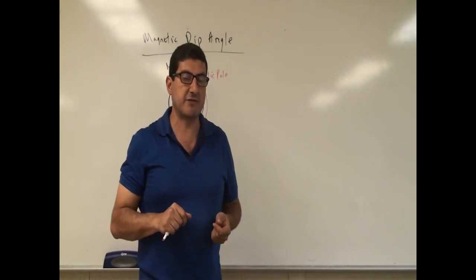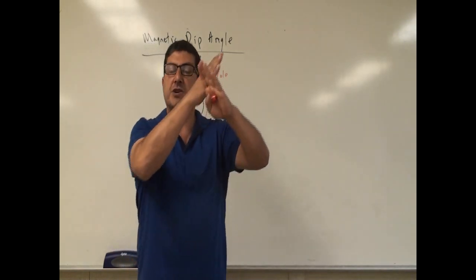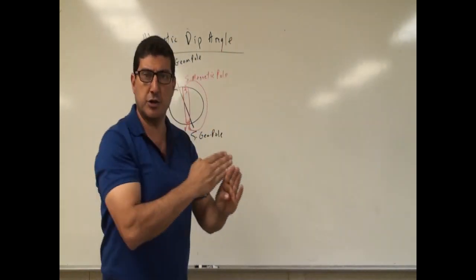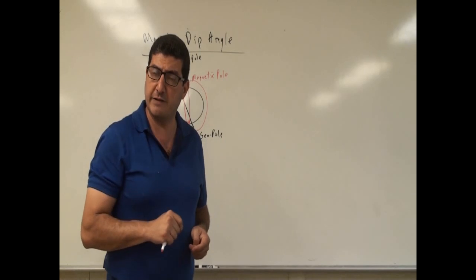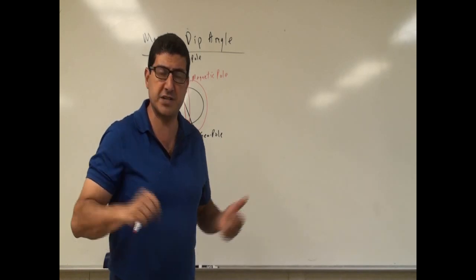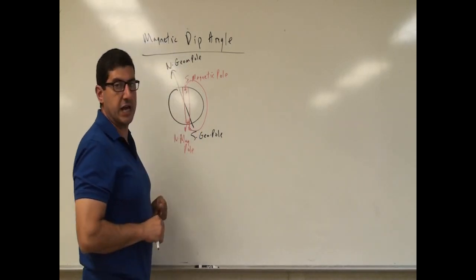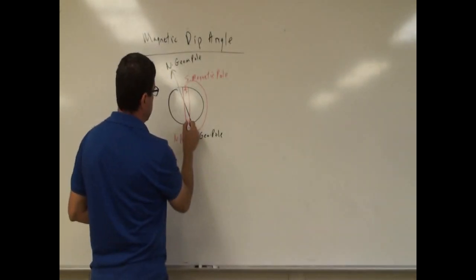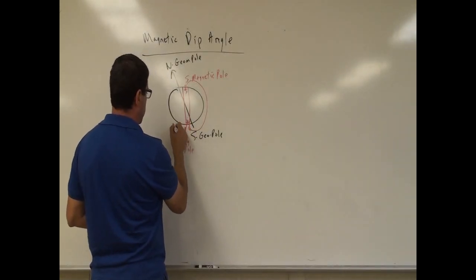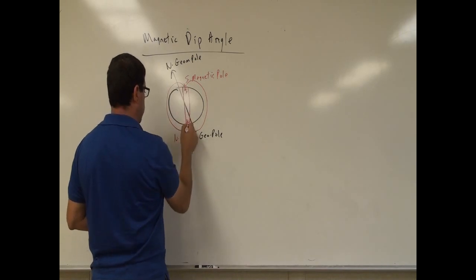There are planets, for example, like Neptune and Uranus, where the magnetic axis and the geometric axis are offset from each other by about 45 to 47 degrees. So they don't necessarily have to coincide. The magnetic field lines come out of the North Magnetic Pole, go around, and go into the South Magnetic Pole.